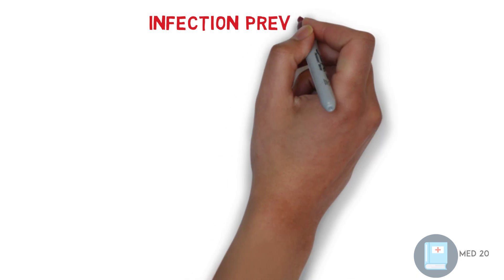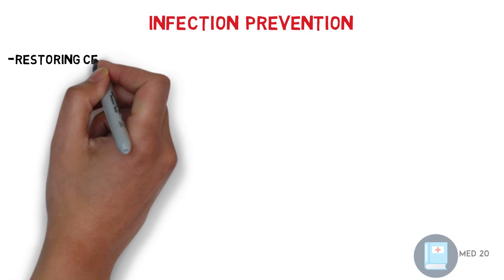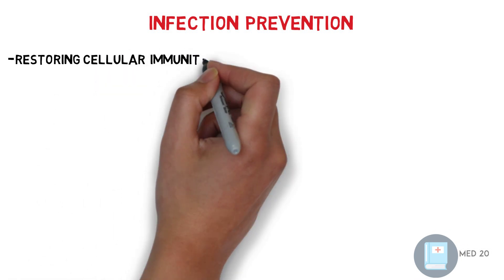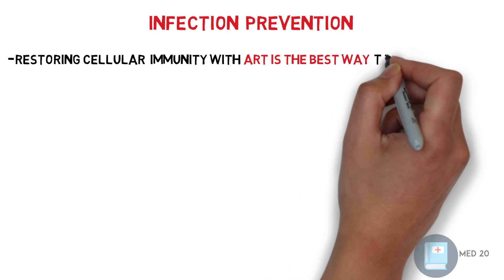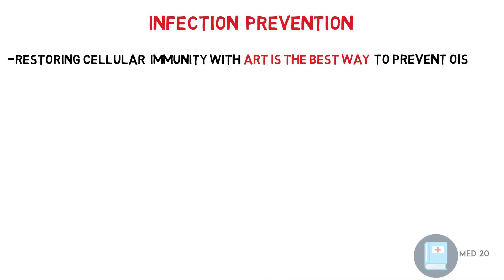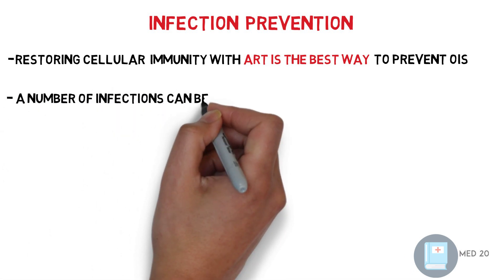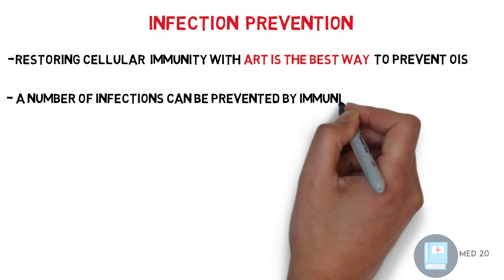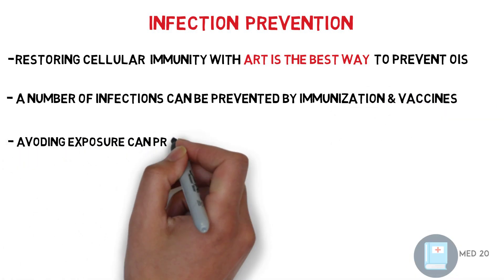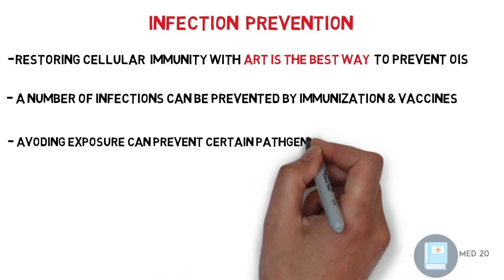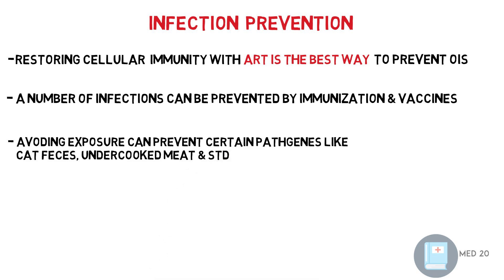Infection prevention: What are the measures taken for infection prevention? First and most importantly, restoring cellular immunity with ART, or antiretroviral therapy, is the best way to prevent opportunistic infections. Second, a number of infections can be prevented by immunizations and vaccines. And third, avoiding exposure can prevent certain pathogens, like avoiding cat feces, undercooked meat, or STDs.